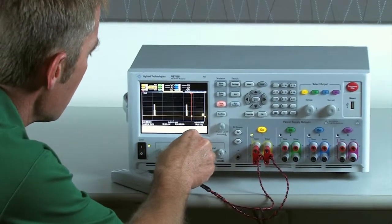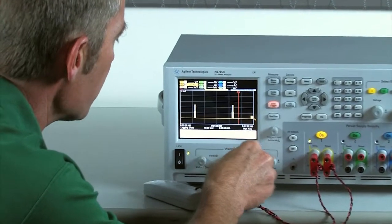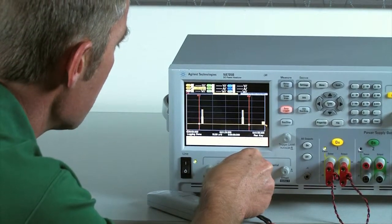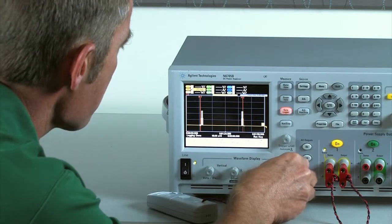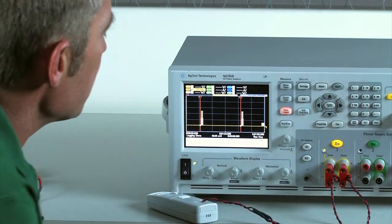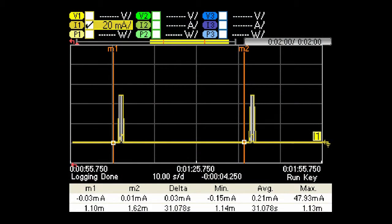So here's a single cycle. I'm going to move my markers in so we can make the measurement. Now we're able to measure the current between the two markers during a single cycle of transmitting the data.